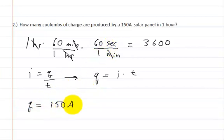And so the charge is going to be equal to the current, which in this situation is 150 amps, which is a lot for a solar panel, multiplied by the time, which is 3,600 seconds. Yeah, I know I said 360, it's 3,600, sorry about that.